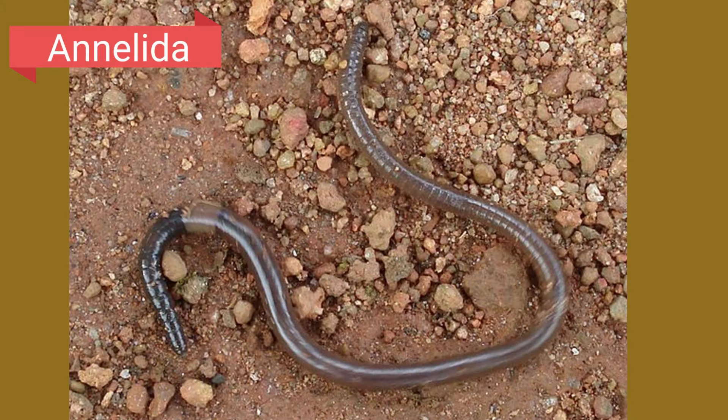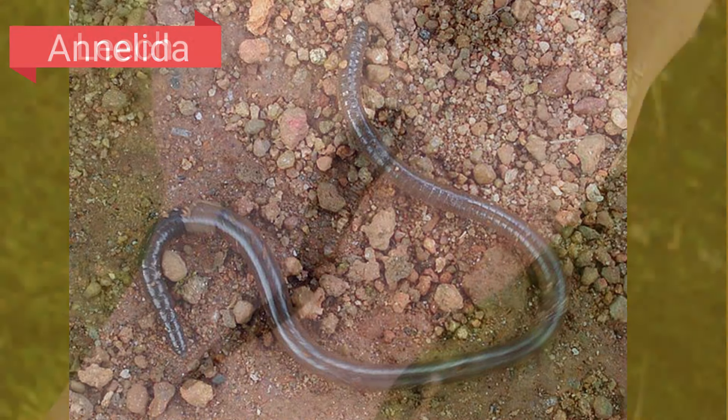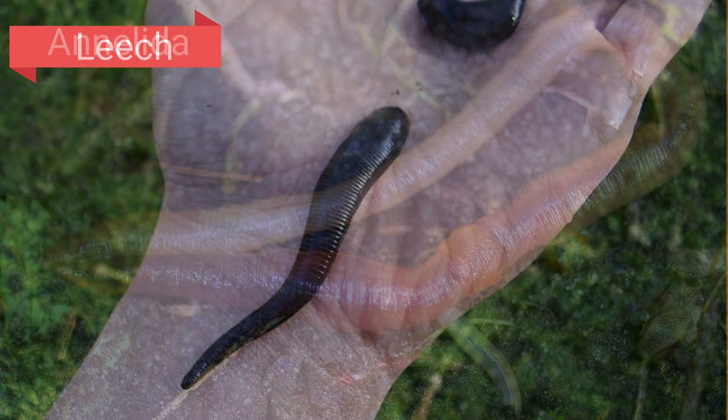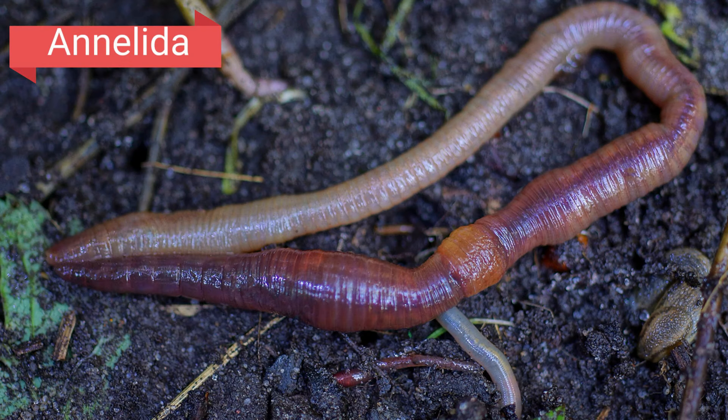Segmented worms, also called annelida. These include earthworms and leeches. Their bodies are made up of many identical soft skin segments.